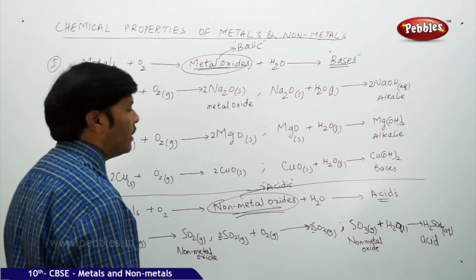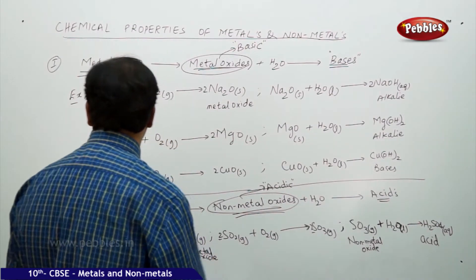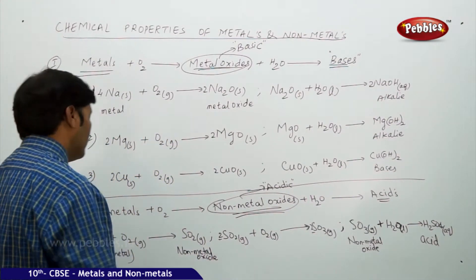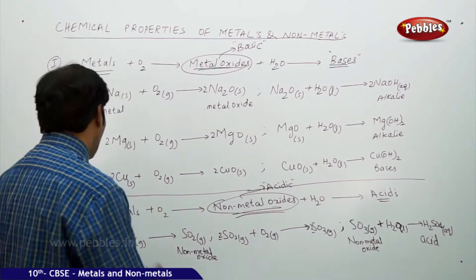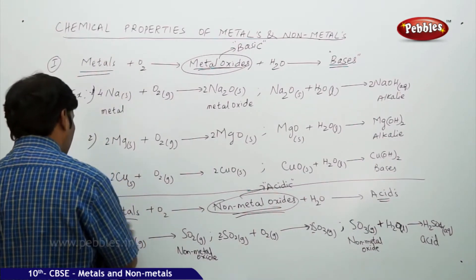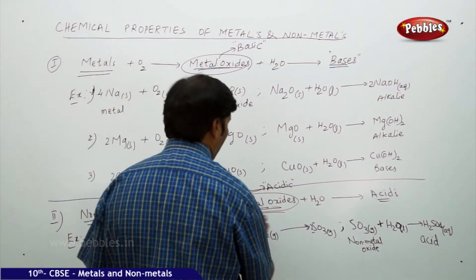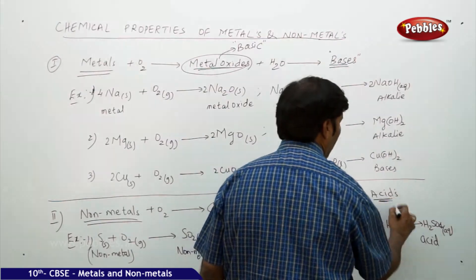In this way we can prepare both acids as well as bases. This is the first example of non-metals reacting with oxygen to give non-metal oxides, and these non-metal oxides give acids.